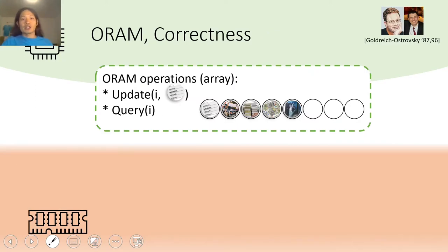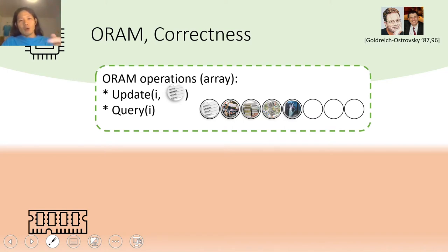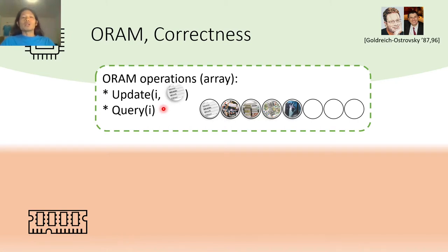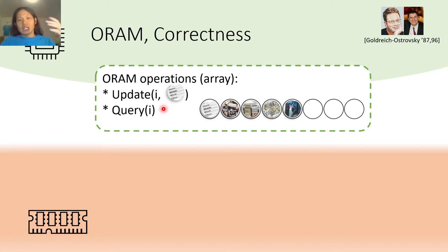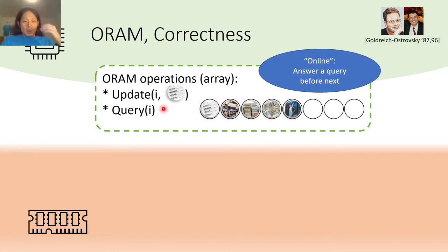To defend against such an adversary, Goldreich and Ostrovsky formalized this problem using the standard random access machine model. Of course, at their time, cloud storage was not as popular as today. The correctness of ORAM is exactly the same as a standard array. We can update or query an array entry using the index of this entry, and just like the standard array, a query has to be answered before the next operation either update or query comes in.